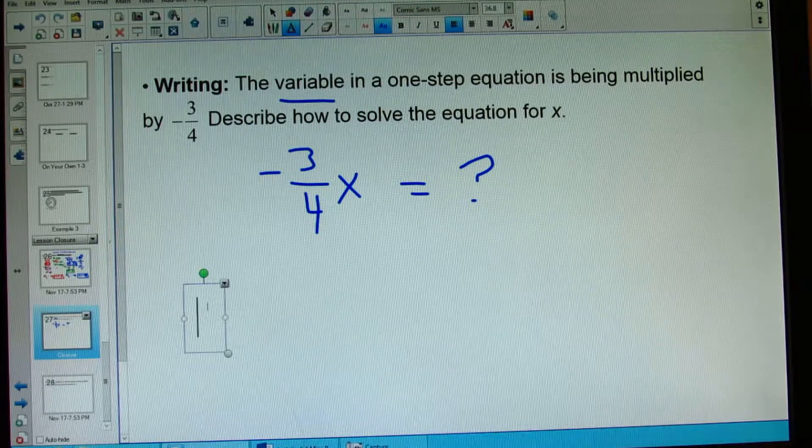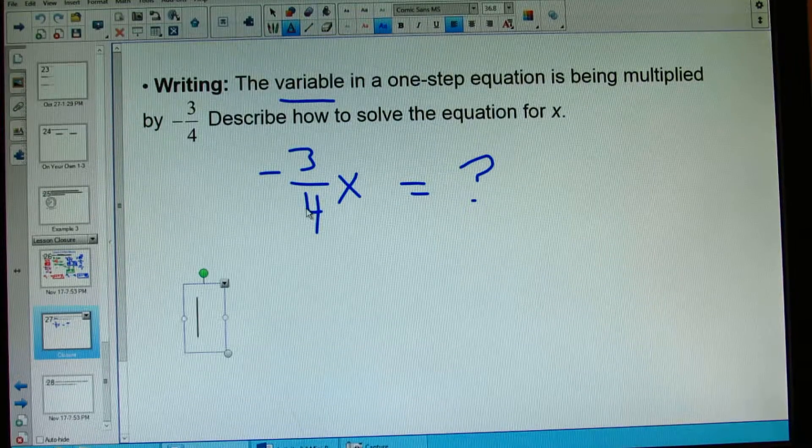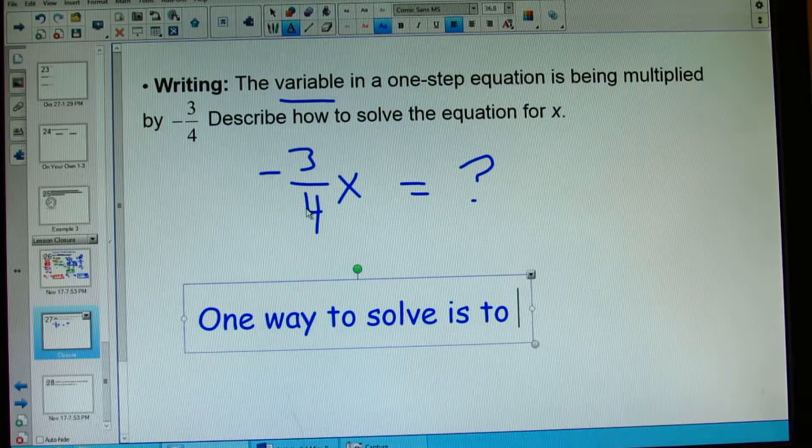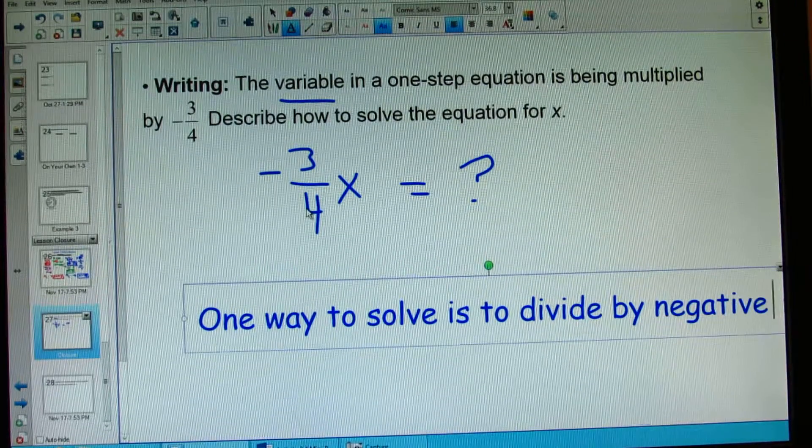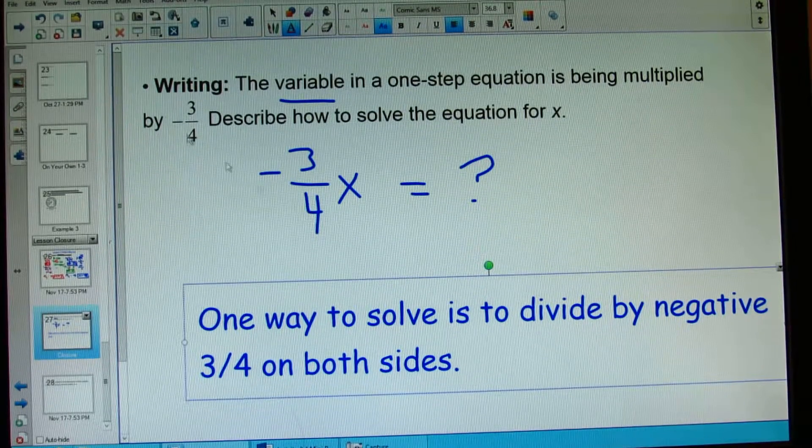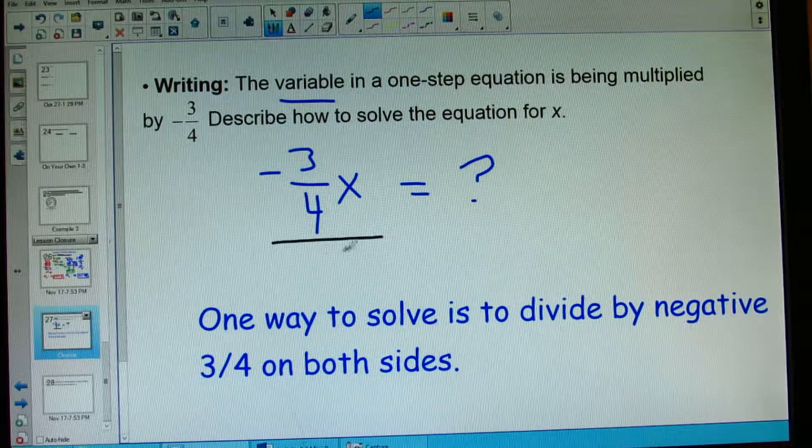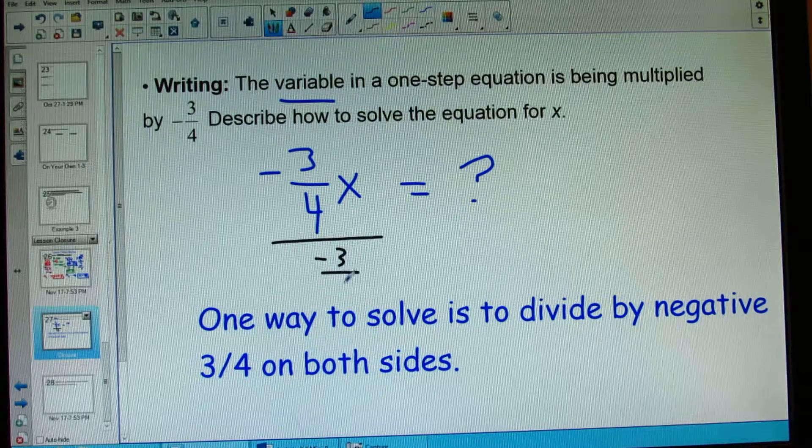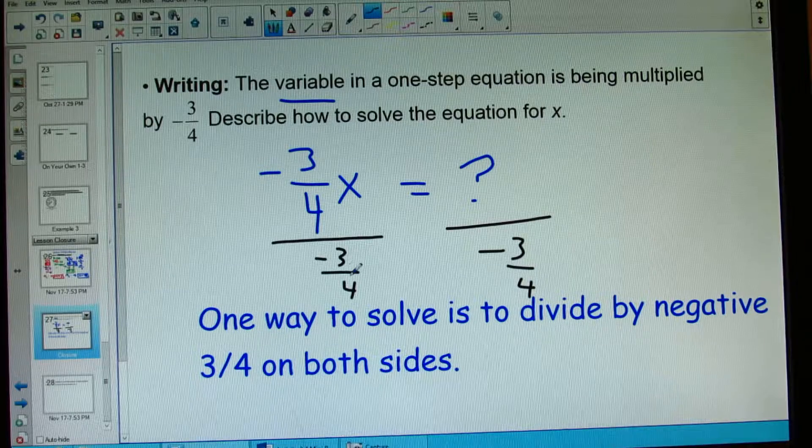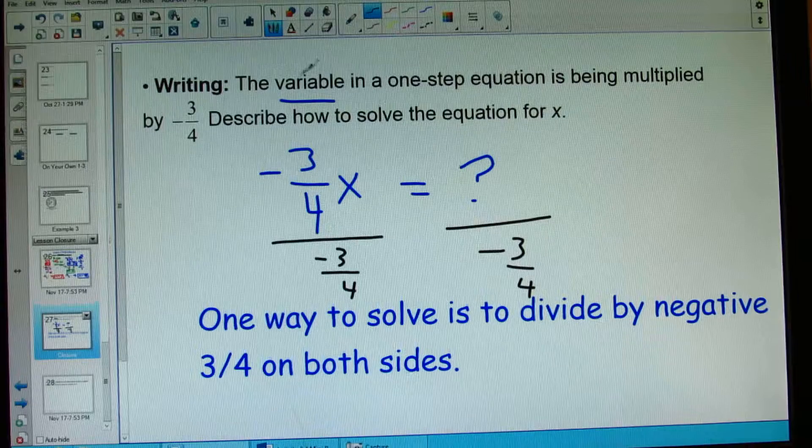One way is you would say, well, if this is multiplying by negative 3 fourths, one way to solve is to divide by negative 3 fourths on both sides. That is totally one way to do it. It will look a little messy if you think about the division. Yikes. It's gonna look a little crazy, right? Divided by negative 3 fourths on both sides. But negative 3 fourths divided by negative 3 fourths, just like negative 8 divided by 8 will cross out to be 1. So that's one way to do it.